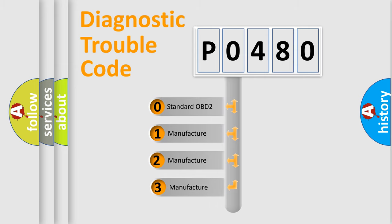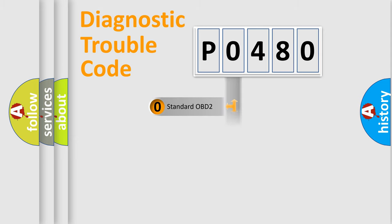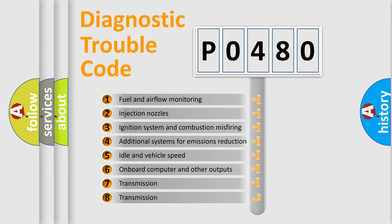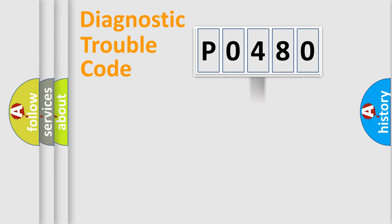If the second character is expressed as zero, it is a standardized error. In the case of numbers 1, 2, 3, it is a more specific expression of the car-specific error. The third character specifies a subset of errors. The distribution shown is valid only for the standardized DTC code.